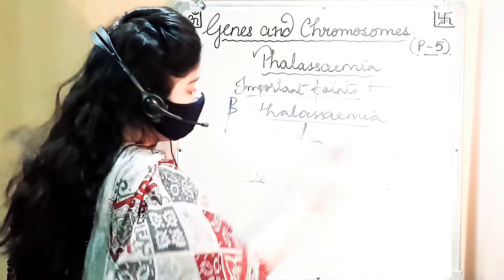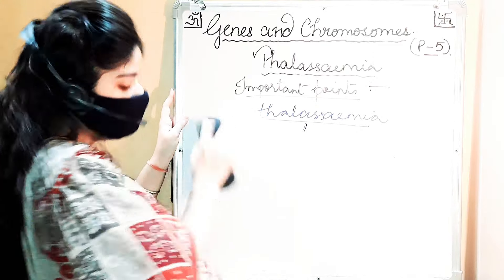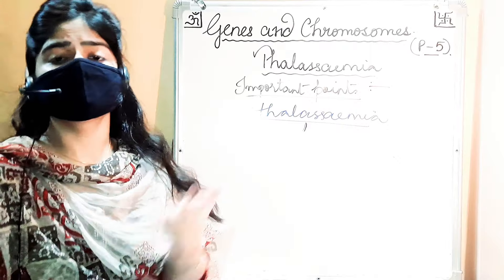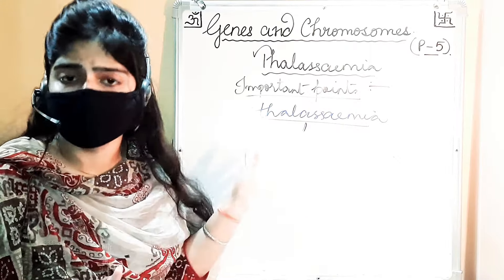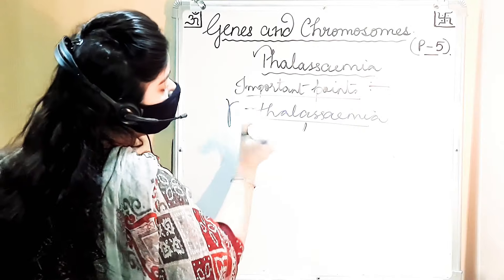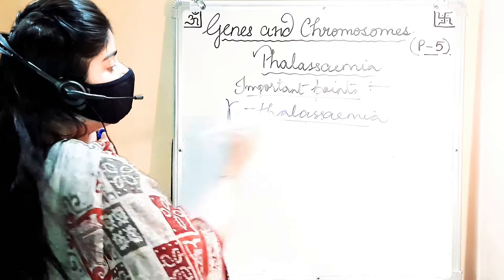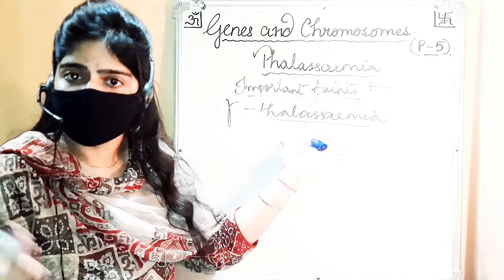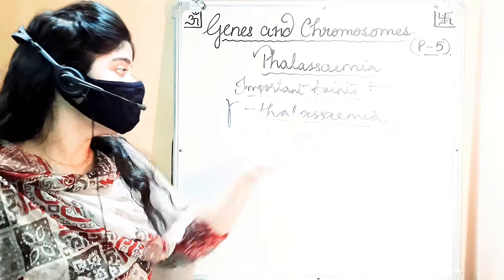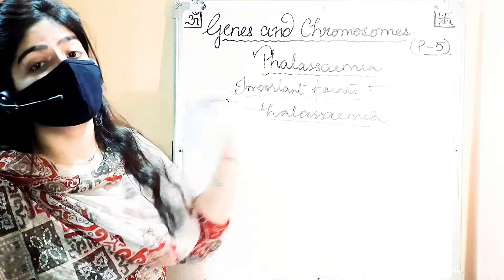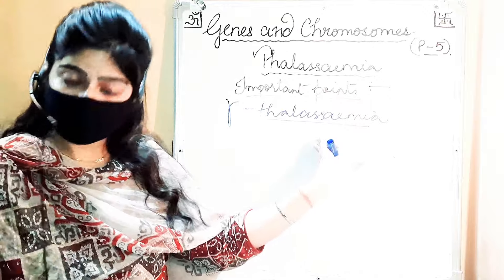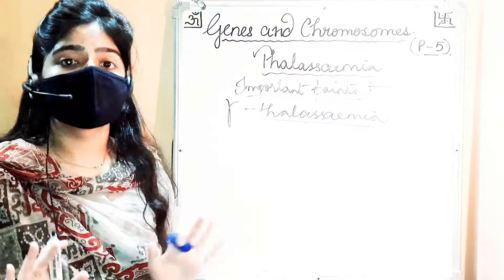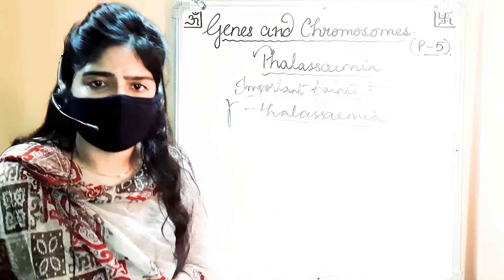Gamma thalassemia has no significant symptoms. Since the gamma chain just contributes 3% to hemoglobin, there is very little effect. It is controlled by one gene. Gamma thalassemia is not covered in detail in the course.